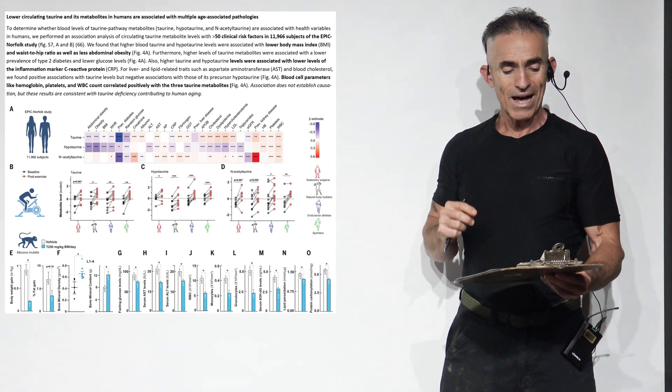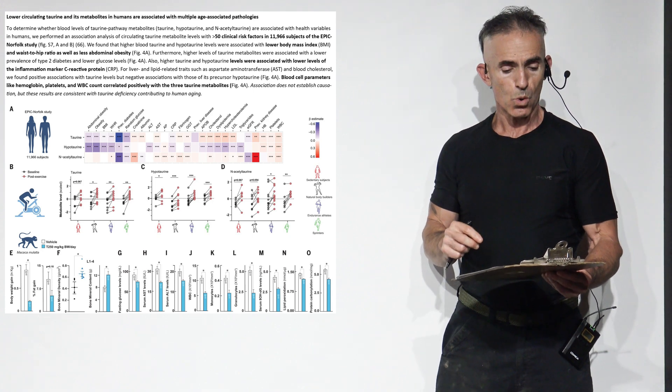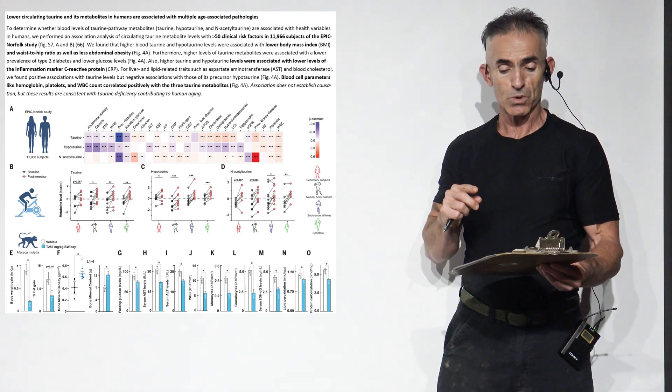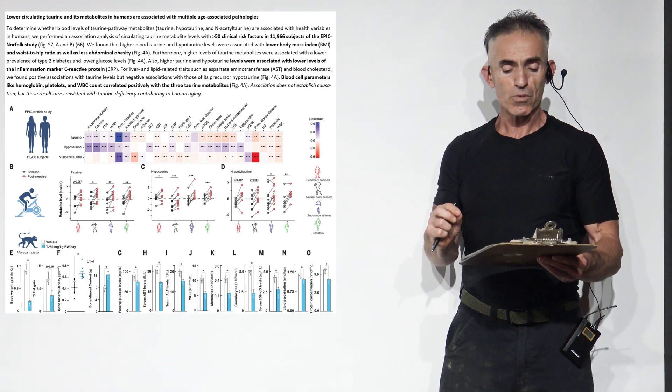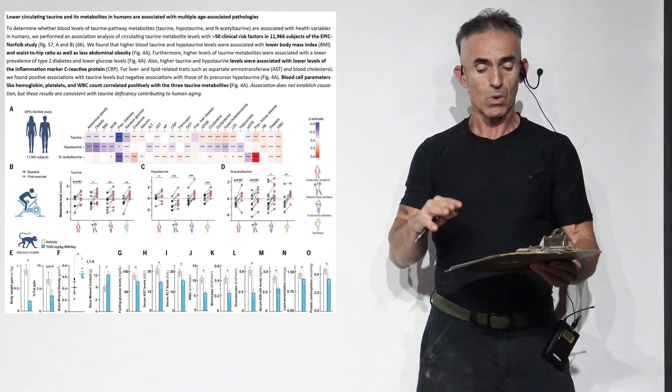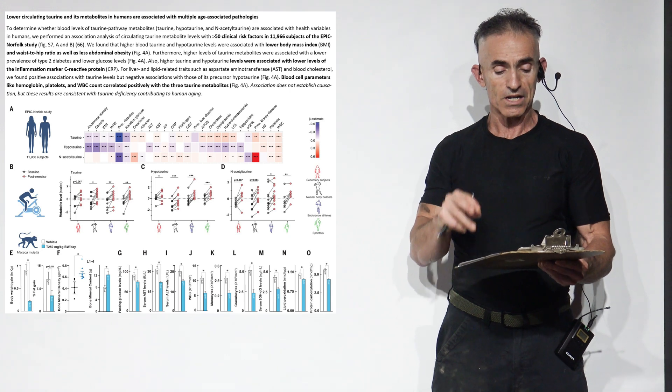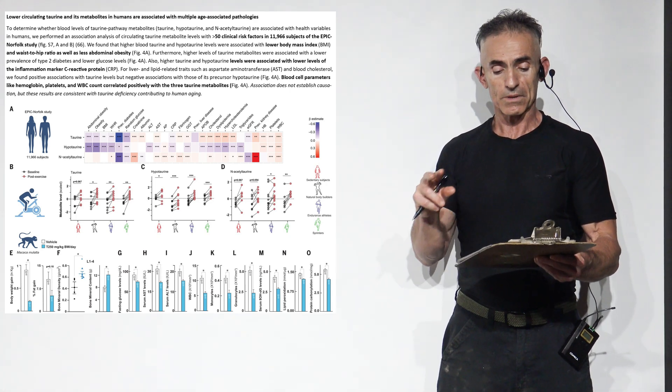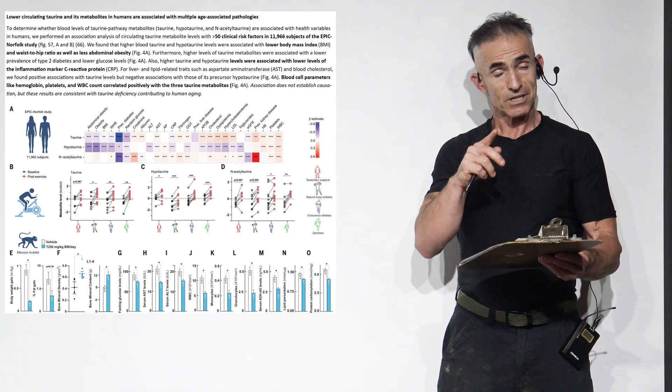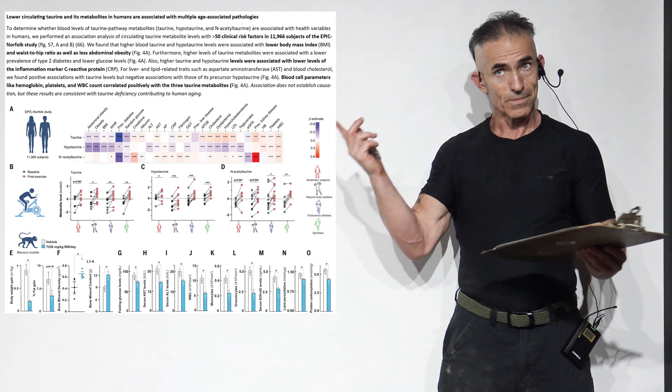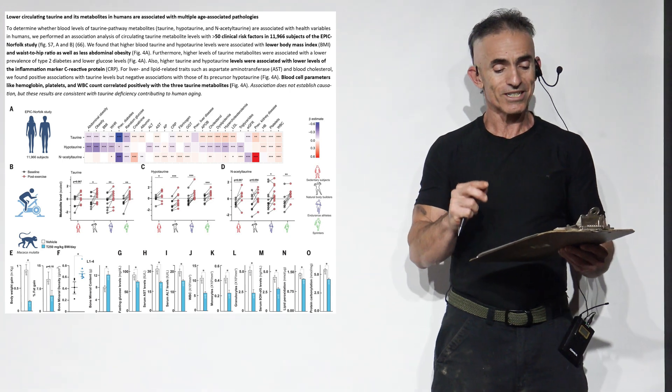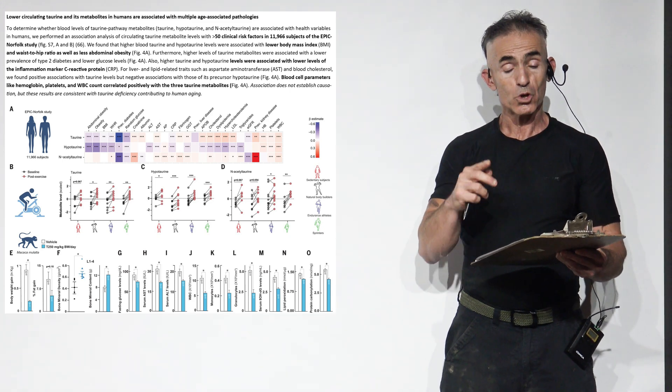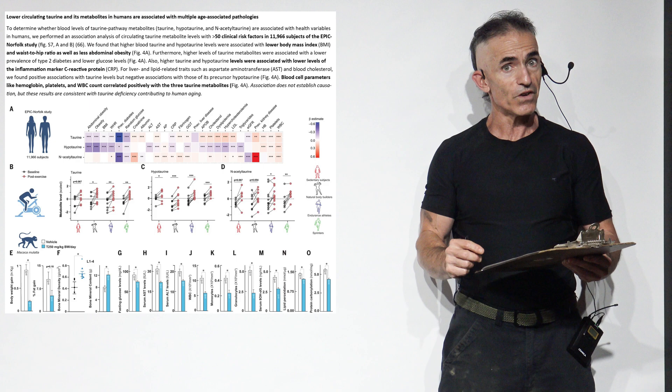For liver and lipid-related traits such as aspartate aminotransferase and blood cholesterol. We found positive associations with taurine levels, but negative associations with its precursor hypotaurine. Blood cell parameters like hemoglobin, platelets, and white blood cell count correlated positively with the three taurine metabolites. Association does not establish causation - first rule of science, besides bias and confounding. But these results are consistent with taurine deficiency contributing to human aging.